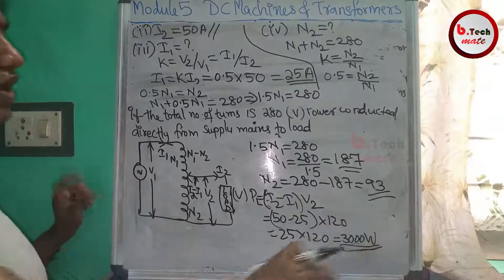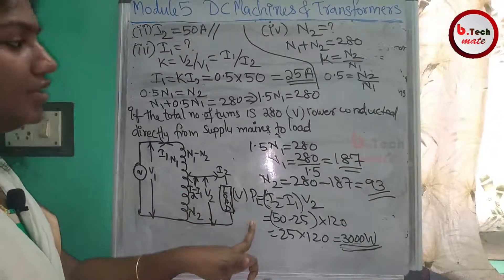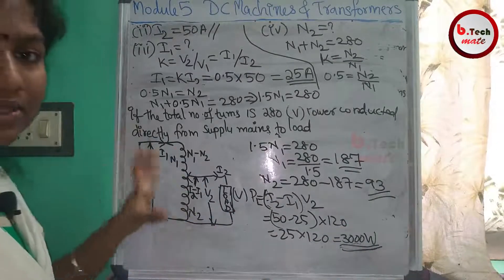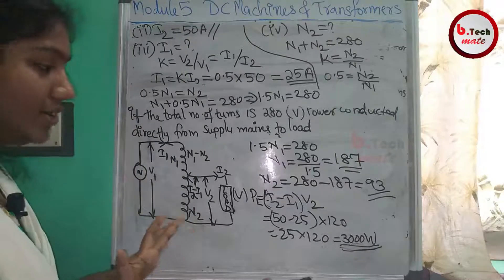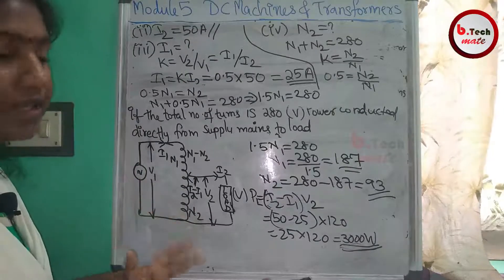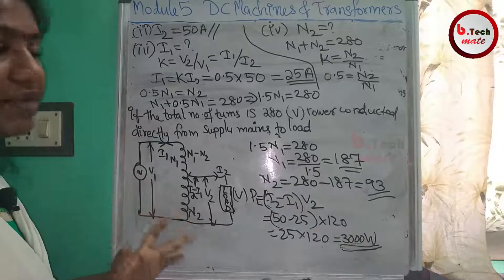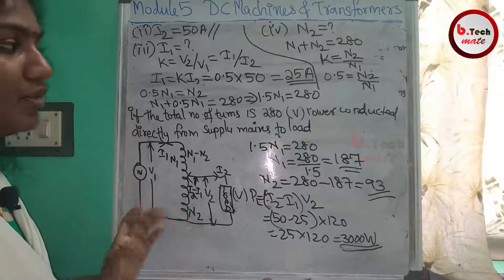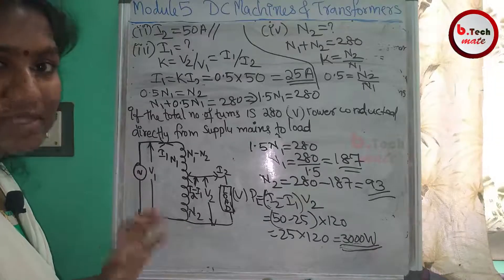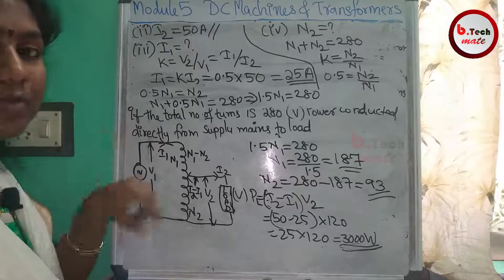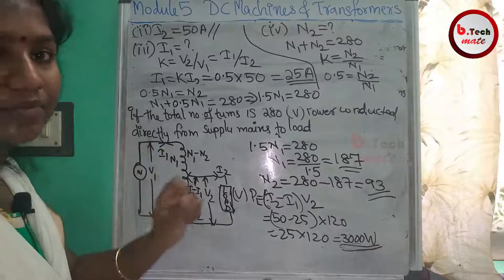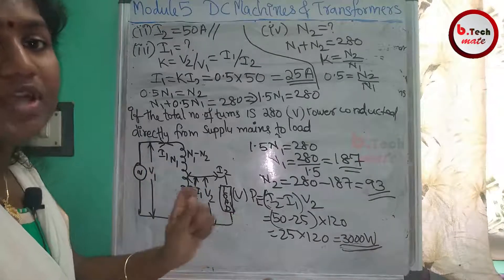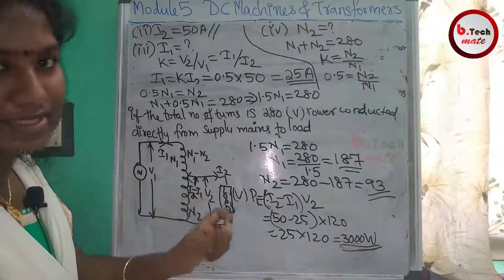Now we have completed the problem. Note that the number of turns came out as decimals, so we need to round to find the correct integer number of turns.